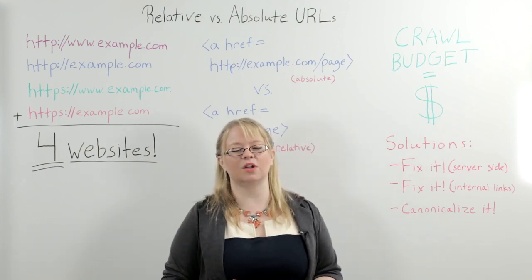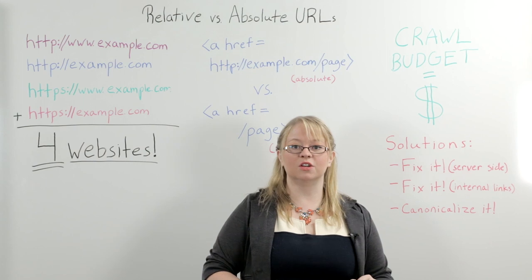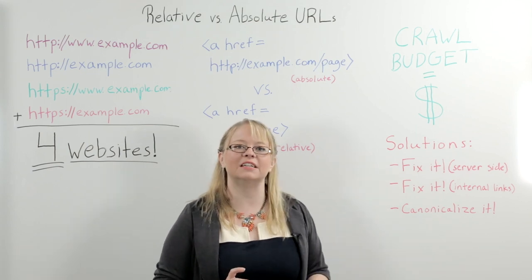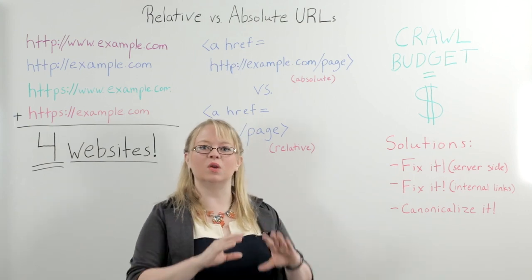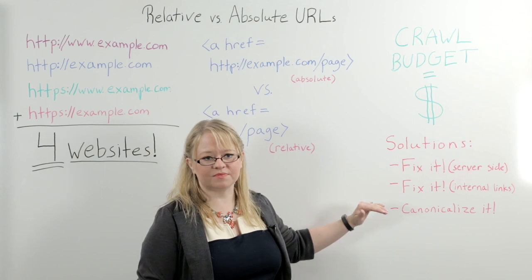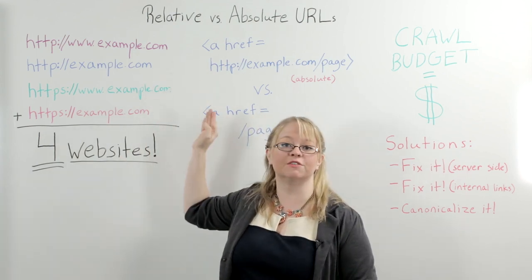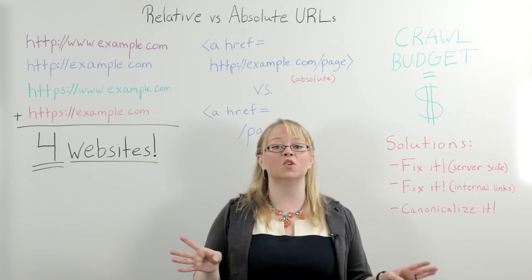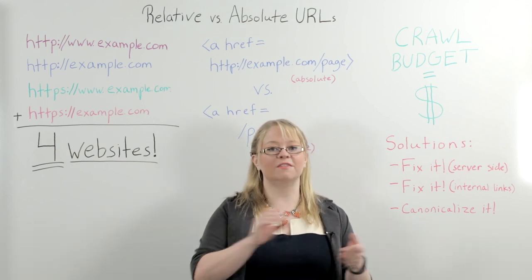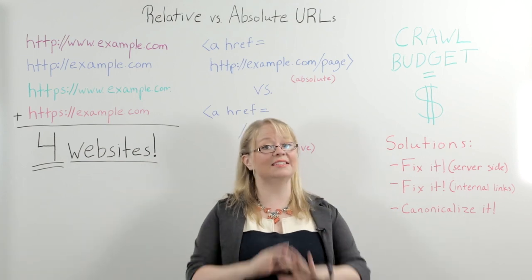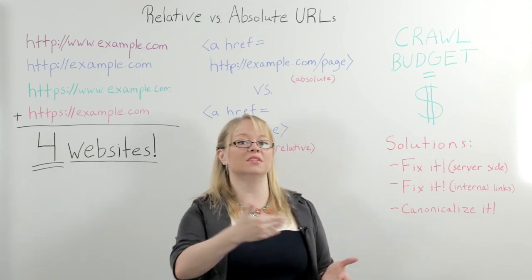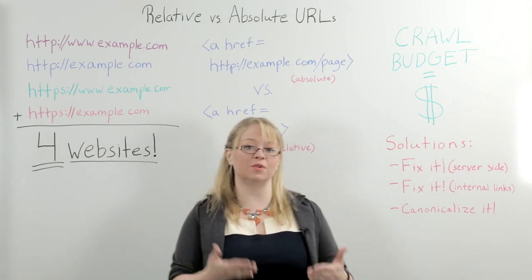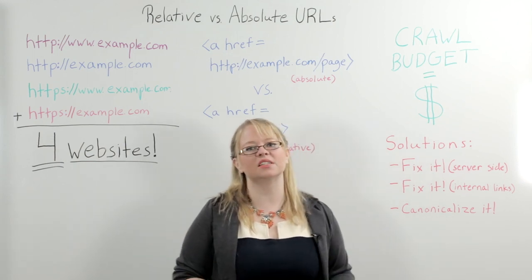Sometimes your dev team is going to say they can't recode the whole nav — it's not a good use of their time. And sometimes they are right; the dev team has more important things to do. If you can't get your internal links fixed anytime in the near future, a stopgap or band-aid you can put on this problem is to canonicalize all of your pages. As you're changing your server to force all versions of your domain to resolve to one, at the same time you should be implementing the canonical tag on all pages to self-canonicalize — so every page has a canonical tag pointing to itself as the canonical version. Having each page self-canonicalize will mitigate both the risk of duplicate content internally and some of the risk posed by scrapers.